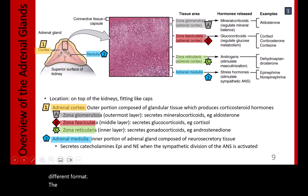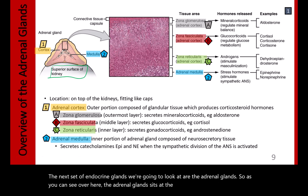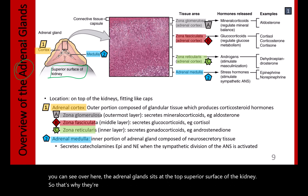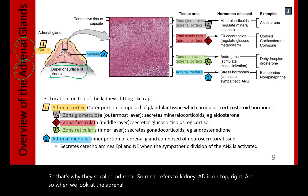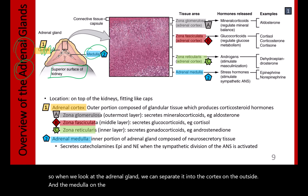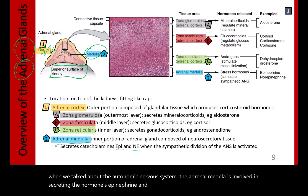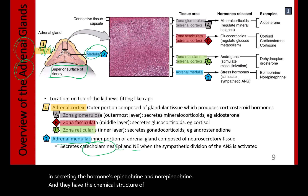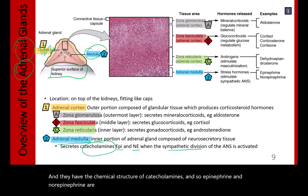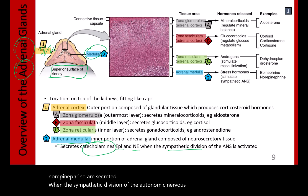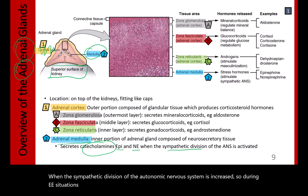The adrenal glands sit on the superior surface of the kidney — that's why they're called adrenal: renal refers to kidney, ad means on top. The adrenal gland is separated into the cortex on the outside and the medulla on the inside. The adrenal medulla secretes epinephrine and norepinephrine, which have the chemical structure of catecholamines, and are secreted when the sympathetic division of the autonomic nervous system is activated during excitement, exercise, embarrassment, and similar situations.